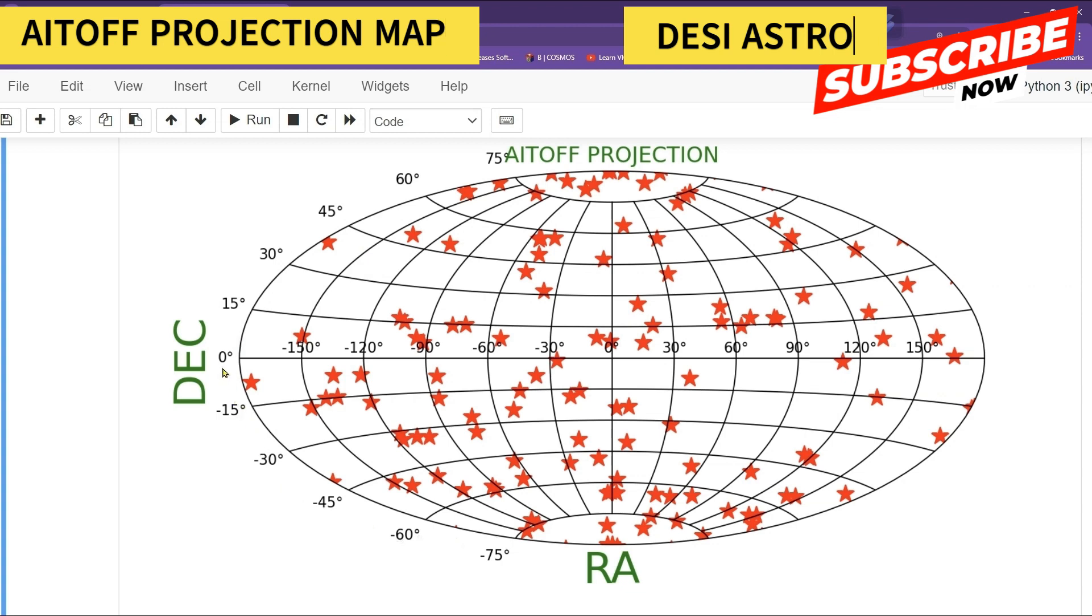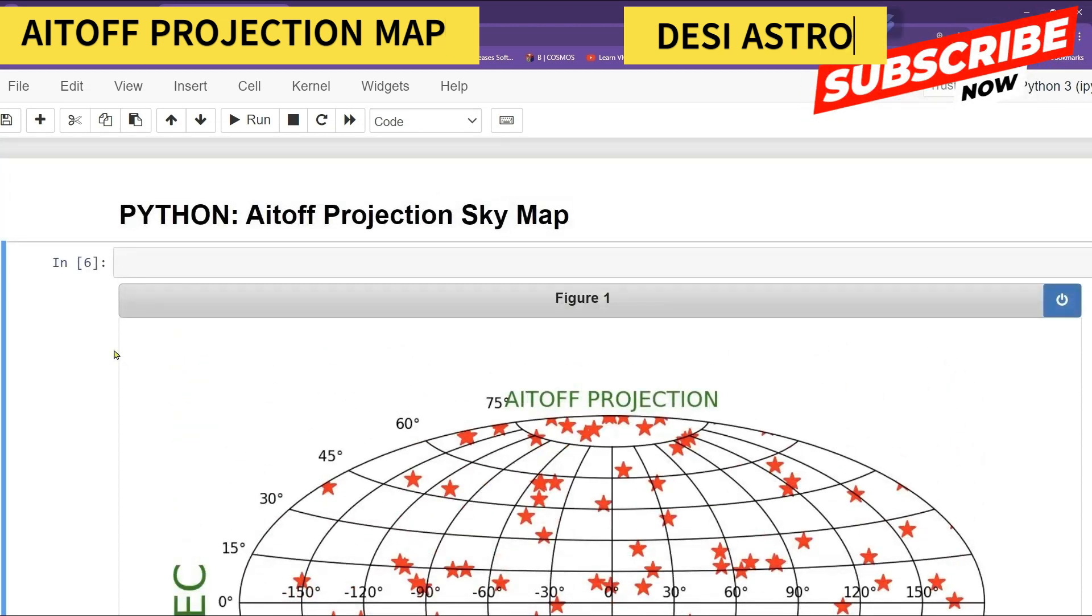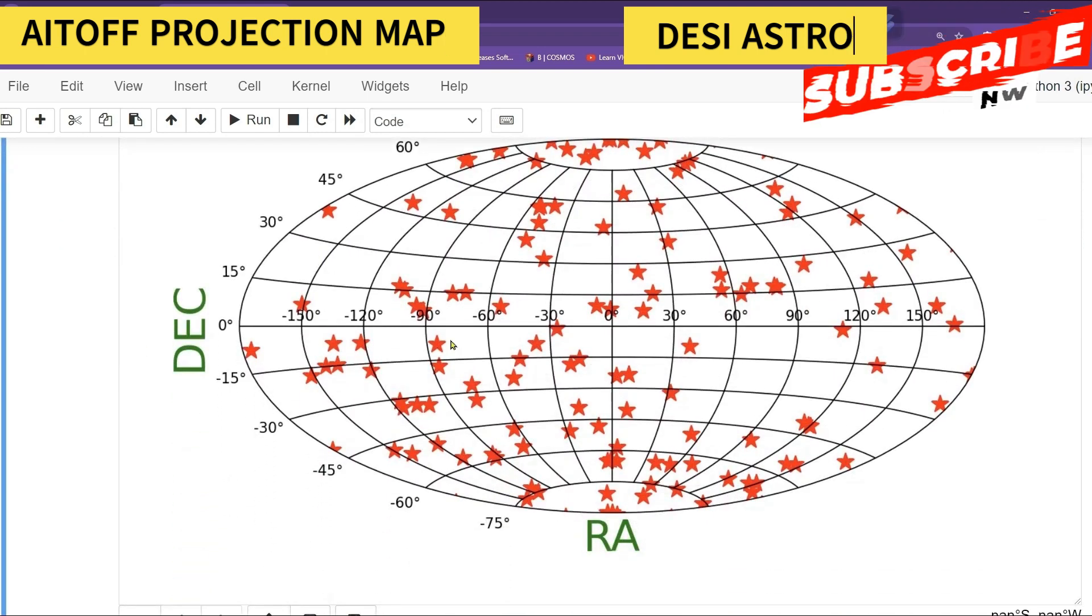So basically, this is useful in constructing astronomical objects map in the sky where objects have a given RA and DEC. By plotting on that projection map, you can see where your object lies, whether it is in northern or southern sky.